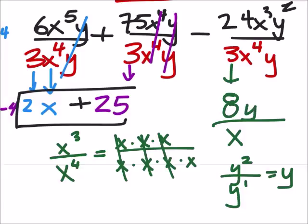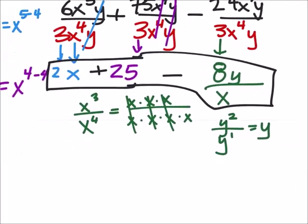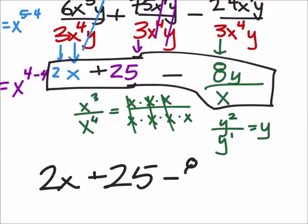Or we would have a y left over in the numerator, and of course that was being subtracted from our expression there. So let me rewrite this thing down here: this is 2x plus 25 minus 8y divided by x.